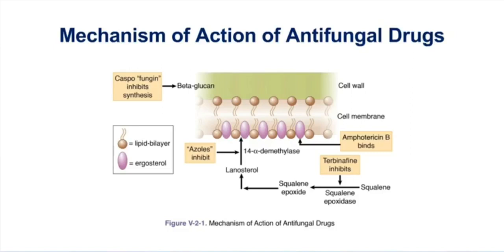Other drugs inhibit the synthesis of ergosterol. For example, the azoles — drugs like ketoconazole and fluconazole — inhibit the enzyme 14-alpha-D-methylase, blocking the conversion of lanosterol to ergosterol.